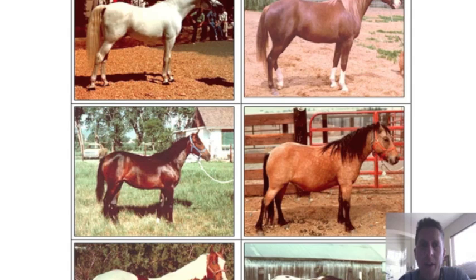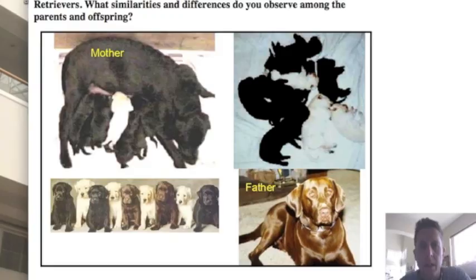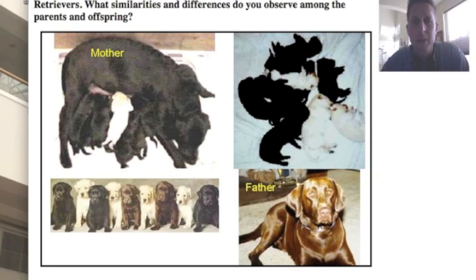Today we want to figure out how these phenotypes exist — what's the source of the variation. We'll run through a number of slides to see if we can figure out what the source of phenotypic variation is for a species.